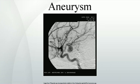Aneurysms can also be classified by their macroscopic shape and size, and are described as either circular or fusiform. The shape of an aneurysm is not specific for a specific disease. Circular aneurysms are spherical in shape and involve only a portion of the vessel wall; they vary in size from 5 to 20 cm in diameter. Fusiform aneurysms are variable in both their diameter and length, with diameters extending up to 20 cm. They often involve large portions of the ascending and transverse aortic arch, the abdominal aorta, or less frequently the iliac arteries.